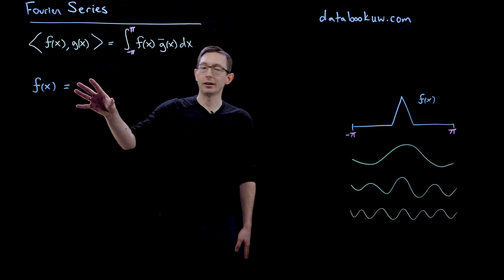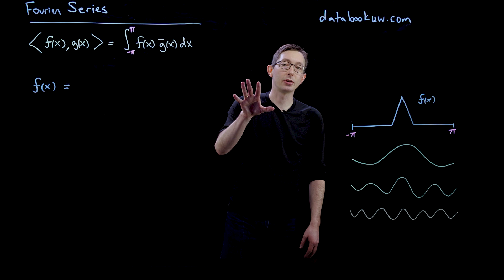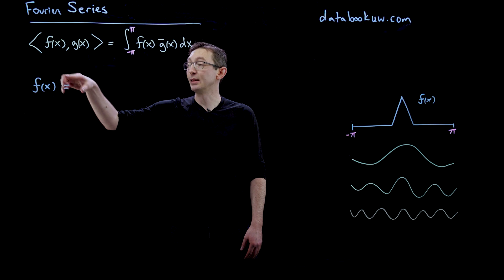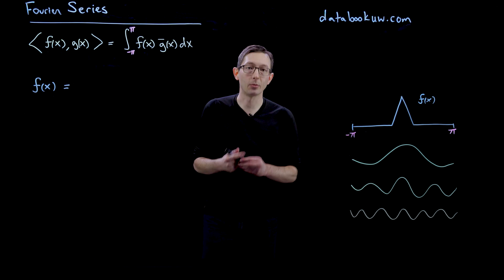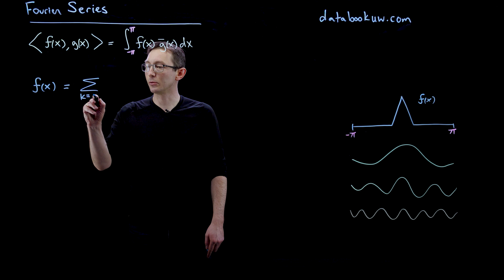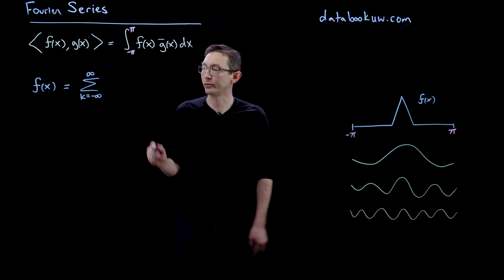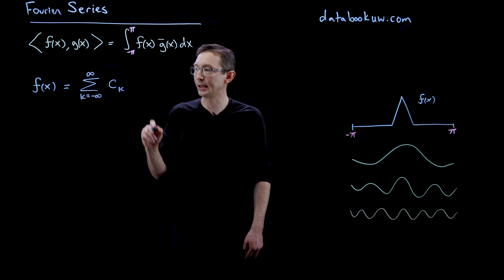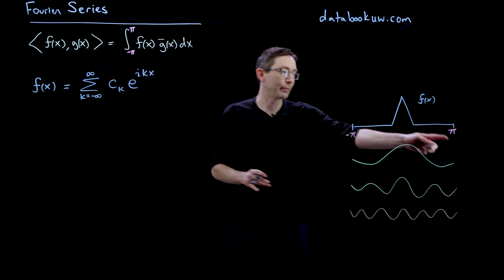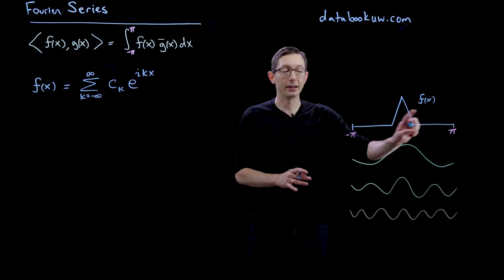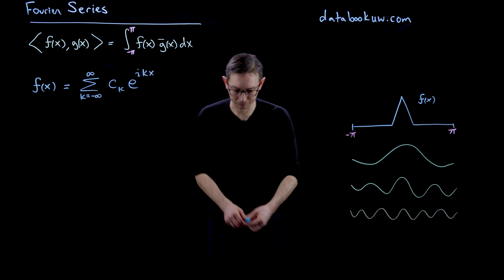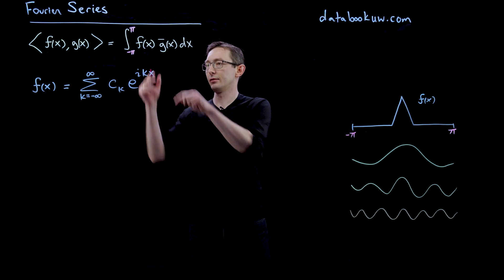In the last few lectures I've shown you how to do this with cosines and sines. Now I'm going to show you how to do this with complex valued functions — f of x doesn't have to be real, this could be a complex valued function. In that case, we're going to write this as an infinite sum from k equals minus infinity to infinity of some complex coefficients c_k times e to the i kx. I'm going back to two-pi periodic functions defined from negative pi to pi because the notation will be a little bit easier here.